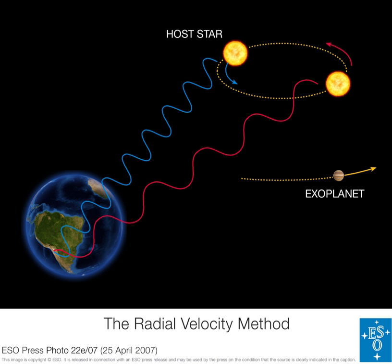In astronomy, the point is usually taken to be the observer on Earth, so the radial velocity then denotes the speed with which the object moves away from or approaches the Earth. In astronomy, radial velocity is often measured to the first order of approximation by Doppler spectroscopy.